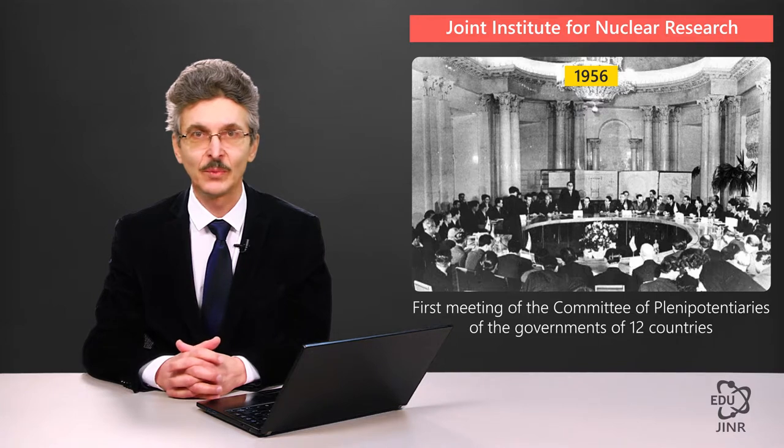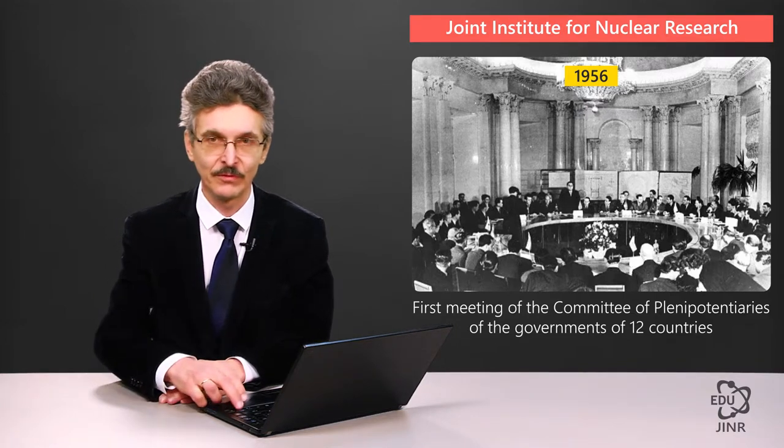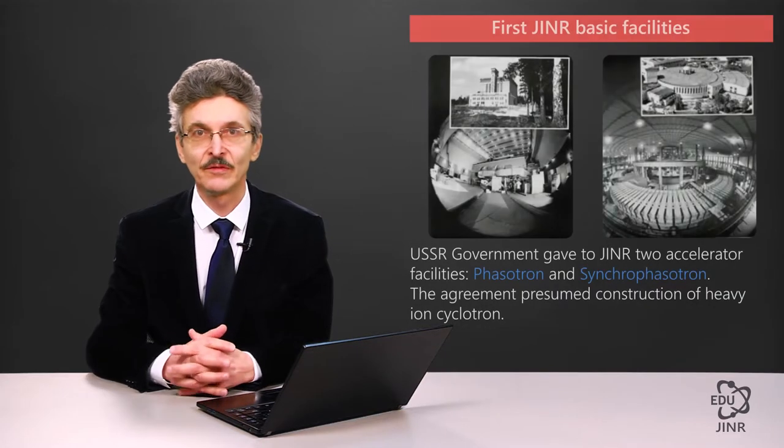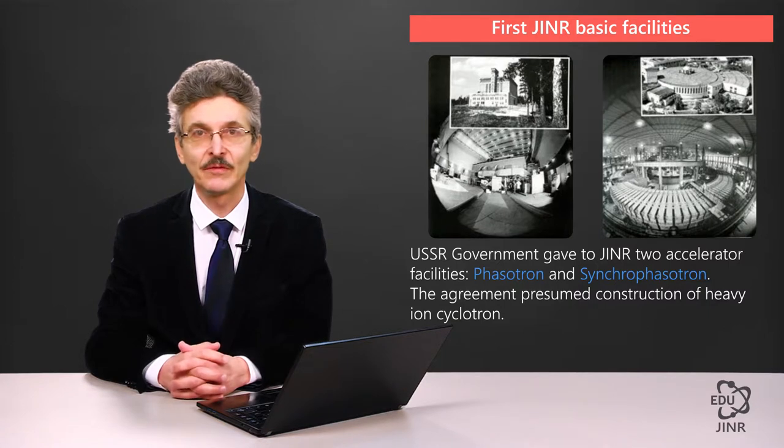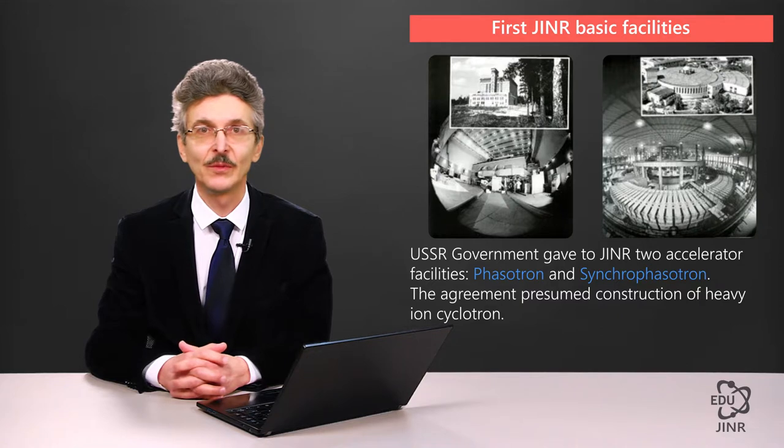The Soviet government handed over two accelerators to the institute to carry out research. They are the phasotron of the Laboratory of Nuclear Problems, located in Dubna, and the synchrophasotron, the construction of which was in its final stages at that time.